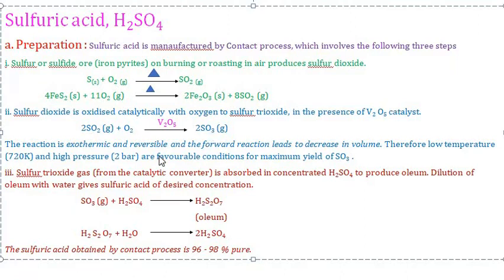This oxidation reaction is exothermic and reversible, and the forward reaction leads to a decrease in volume. Therefore, low temperature and high pressure are favourable conditions for maximum yield of sulfur trioxide. Step 3: SO3 gas is absorbed in concentrated sulfuric acid to produce oleum (H2S2O7), also called fuming sulfuric acid.